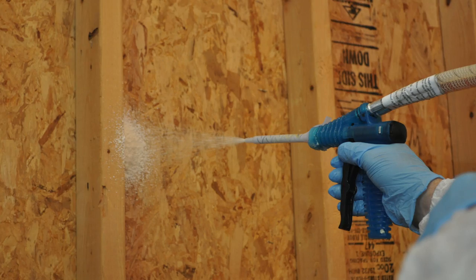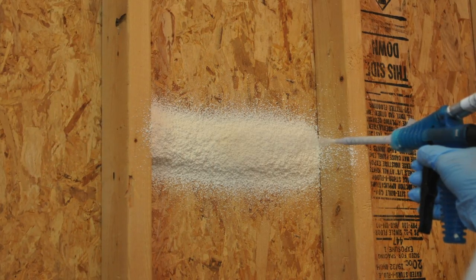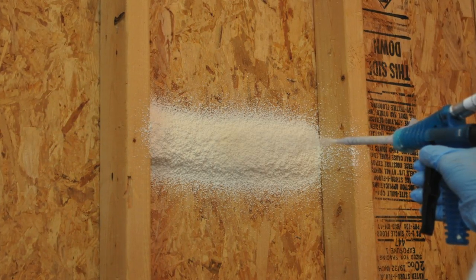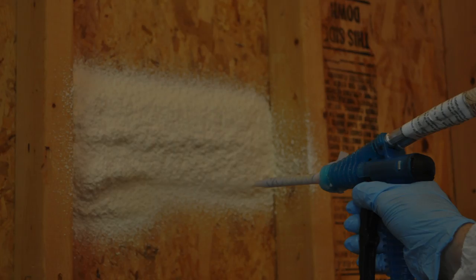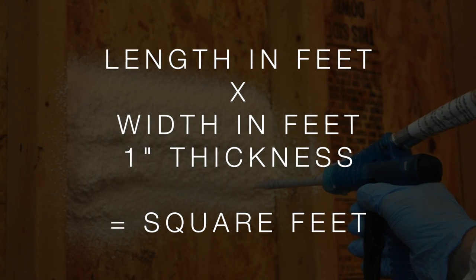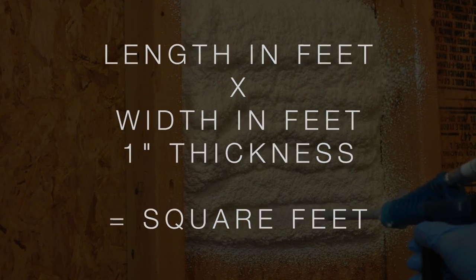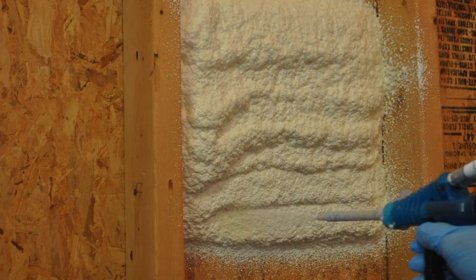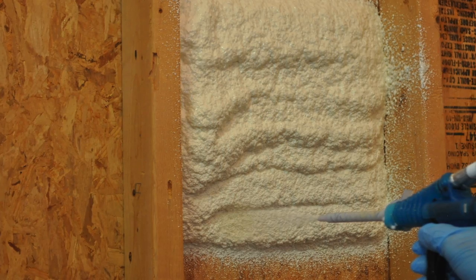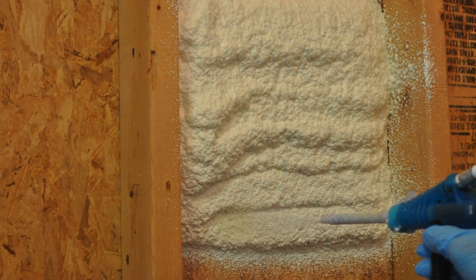It can also be represented as a dimension in square feet, which is length in feet multiplied by width in feet at a thickness of 1 inch. Check out our yield calculator on FOMO.com to determine how much low pressure polyurethane foam you need to complete your next project.